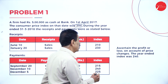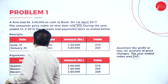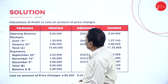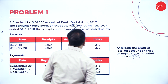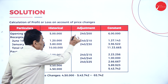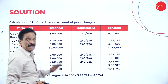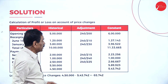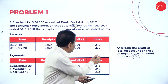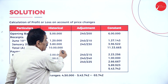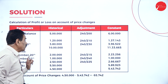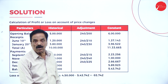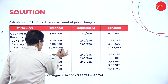Payments include costs of 2 lakh and 1 lakh with indices 215, 240, and 225. Ascertain the profit or loss on account of price changes. The year-end index was 240. The basic index was 200. Opening balance was 5 lakh; that day's index was 200, today's index is 240, so 5 lakh becomes 6 lakh. On 10th, receipt of 1 lakh 20,000 with index 210 becomes 1 lakh 37,143. Then 3 lakh 80,000 with index 230 becomes 3 lakh 96,522. Total receipts raised from 10 lakh to 11 lakh 33,665.